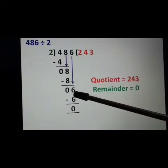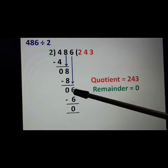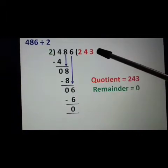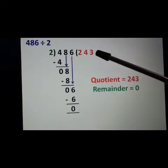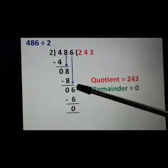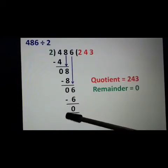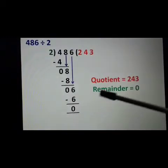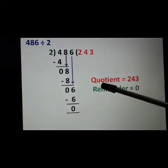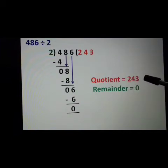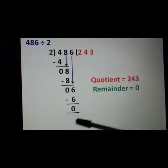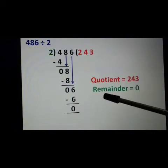2 fours are 8, which is greater than 6. So we will take the third step: 2 threes are 6. 6 minus 6 is equal to 0. Here, the quotient is 243 and the remainder is 0.